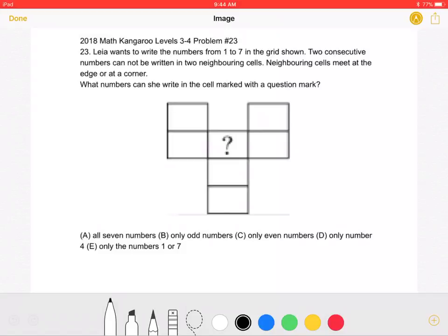To start, the cell in the middle with the question mark will neighbor five of the other cells. Namely, these five cells will neighbor the question mark. One cell does not neighbor the question mark. This cell.